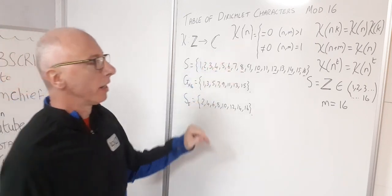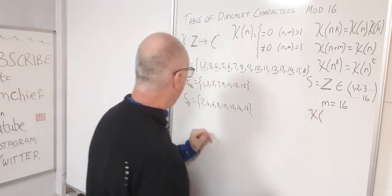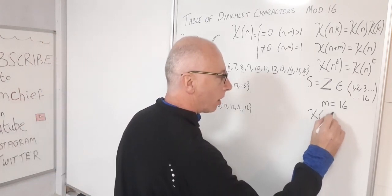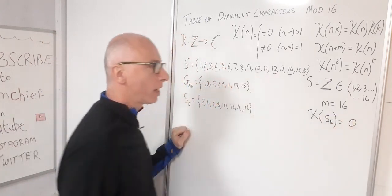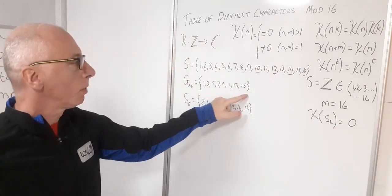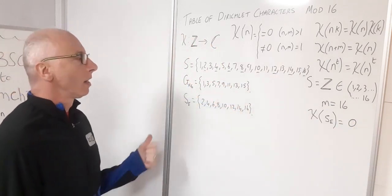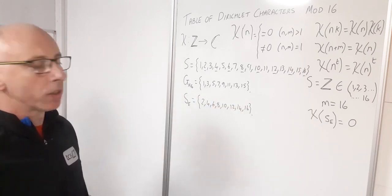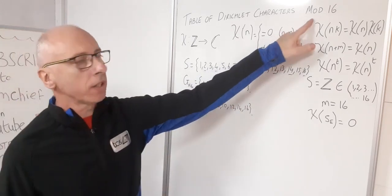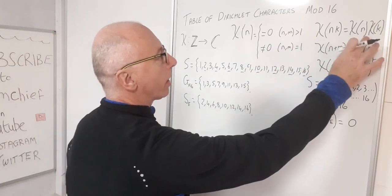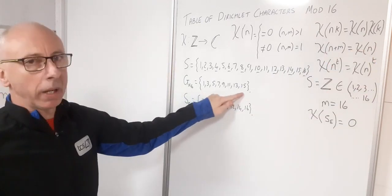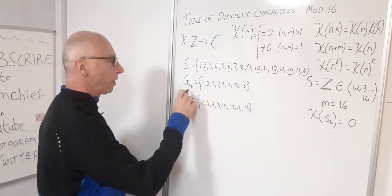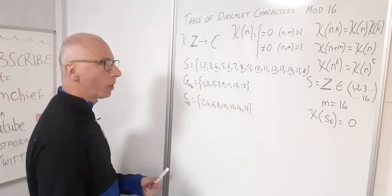All members of S_E — the even numbers — will have chi equal to zero. So we've already split our table down into eight numbers. For the remaining eight coprime numbers, we're into group theory territory. Since we're working modulo 16, we're interested in finding a generator of this group, so let's go about that.